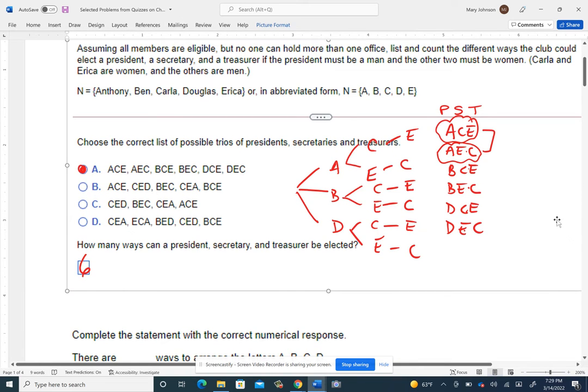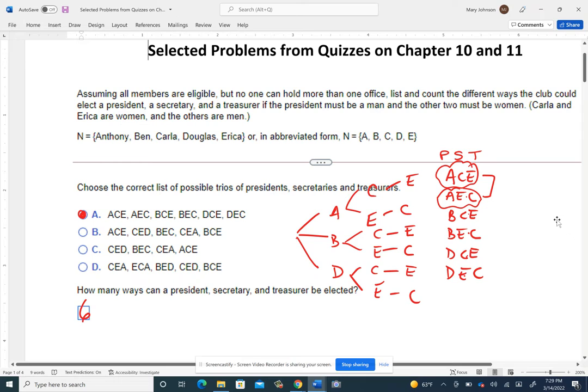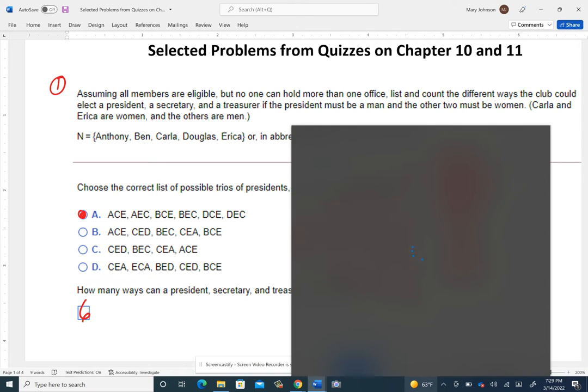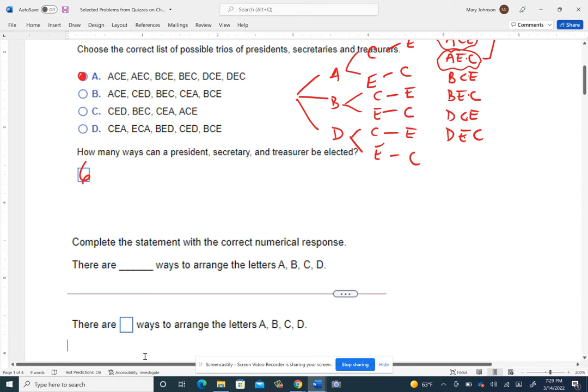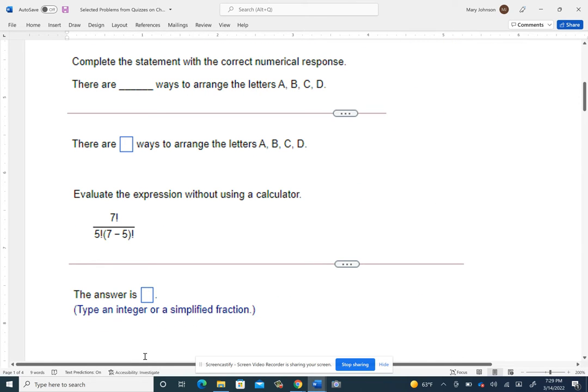Again, these are just different problems that I pulled off of the quizzes from chapter 10 and chapter 11. The next problem has me complete the statement with the correct response. How many ways can you arrange the letters A, B, C, and D? So you got to think about that.